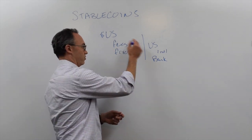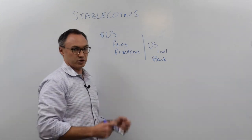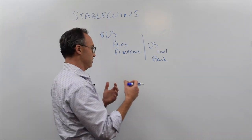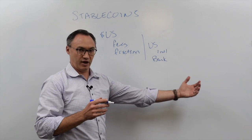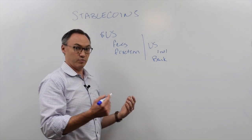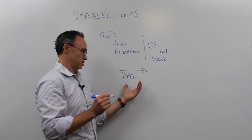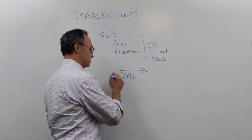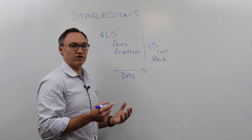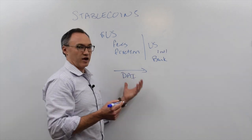Banks charge fees to move money back and forth, and there's friction — you have to call the bank, do a wire transfer or ACH, deal with banking hours, and possibly convert to another currency. But if I do this in a cryptocurrency, it can be very seamless. I can send a stablecoin like DAI to someone instantaneously around the world for a very low fee, and they'll get it right away.